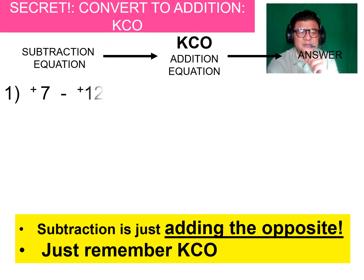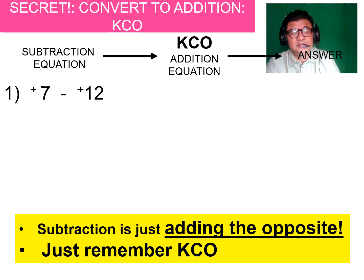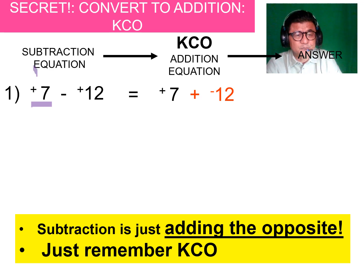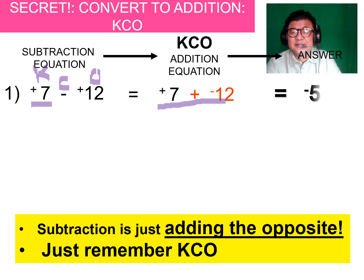Let's start with 7 minus 12. It's subtraction, but subtraction is just adding the opposite. Rewrite it using KCO: keep positive 7, change minus to plus, use the opposite of 12 which is negative 12. Now you're adding two different signs — subtract the absolute values and you get 5. The greater absolute value is negative 12, so the answer is negative 5.